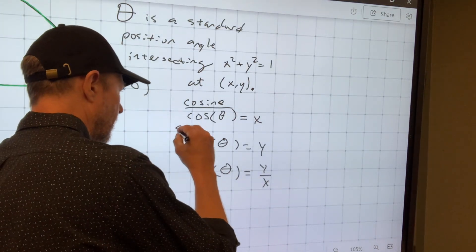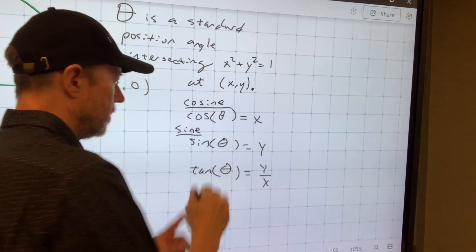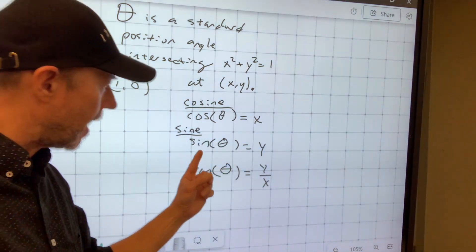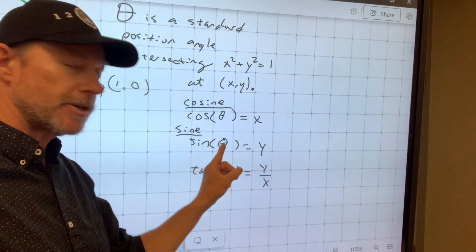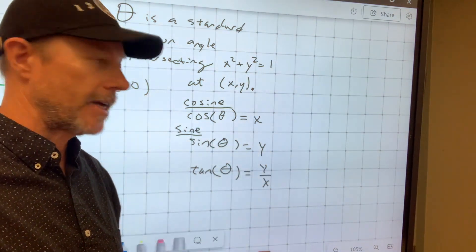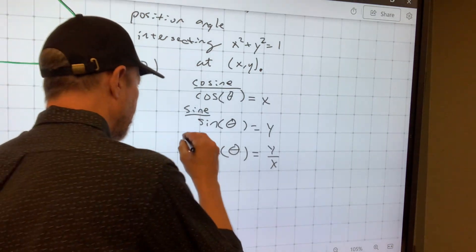Sine, which we have here, denoted sin, sine of the angle is equal to y. So you put in the angle measurement, you get out the y-coordinate where that angle intersects the unit circle.